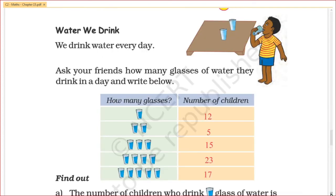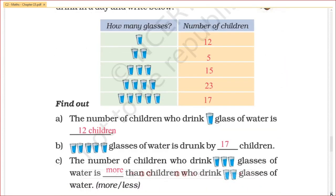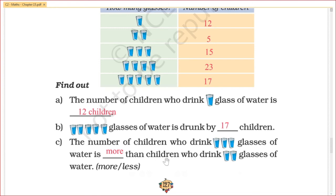What do we drink? We drink water every day. Ask your friends how many glasses of water they drink in a day and write below. First, you will have one glass. The children who drink 3 glasses of water is dashed than the children who drink 2 glasses of water. The 3 glasses count is 15 children. The 2 glasses count is greater than 5, so more than.